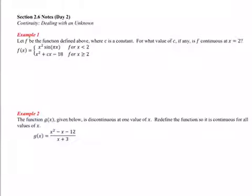So let's look at example 1. Let f be the function defined below, not above, where c is a constant. For what value of c, if any, is f continuous at x equals 2?